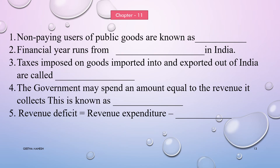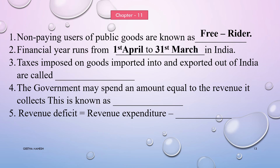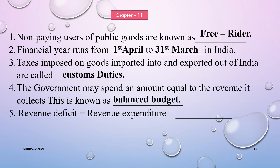Let us discuss a few important fill in the blanks from the government budget, chapter 11. Non-paying users of public goods are known as free riders. The financial year runs from 1st April to 31st March in India. Taxes imposed on goods imported into and exported out of India are called custom duties. When the government spends an amount equivalent to the revenue it collects, this is known as a balanced budget. Revenue deficit equals revenue expenditure minus revenue receipts.